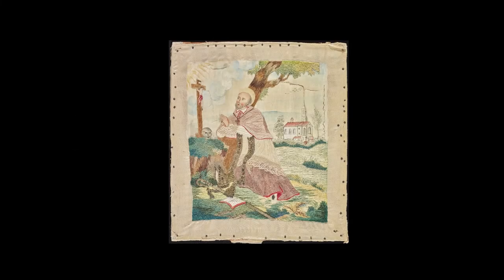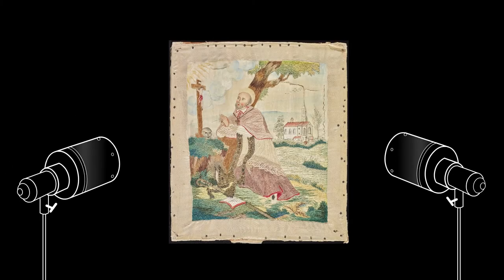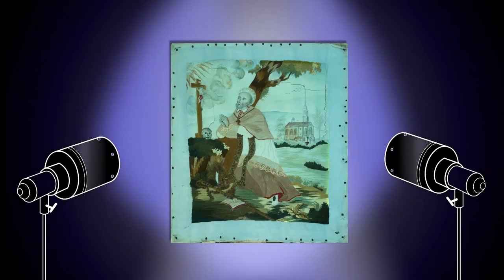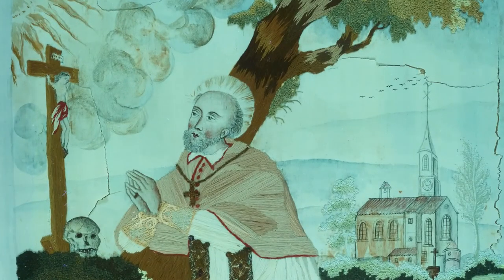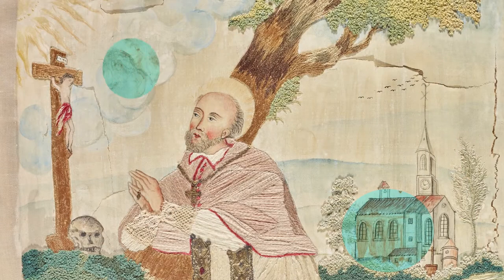With its signature violet tint, ultraviolet fluorescence is the emission of light caused when an object is exposed to UV radiation. Two UV sources are placed on both sides of the object, as is done with normal lighting. It enables the conservator to differentiate between original and modern materials and to identify areas that have been retouched.